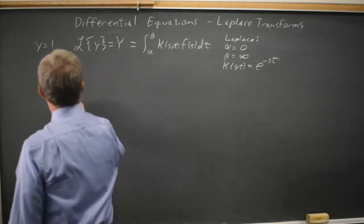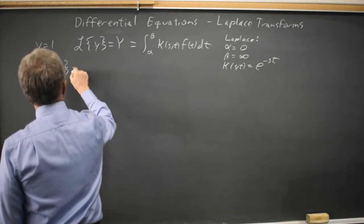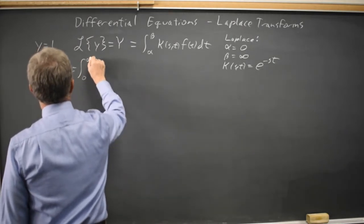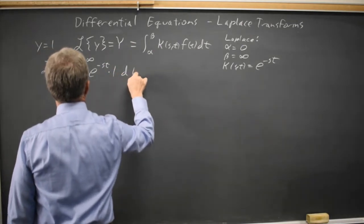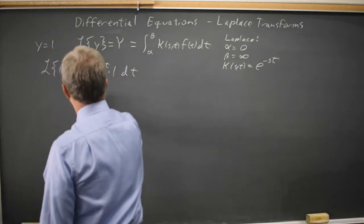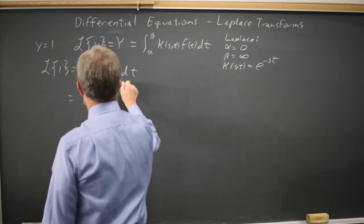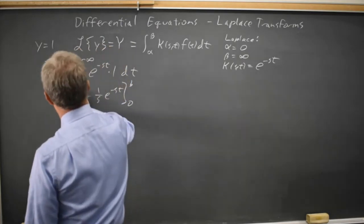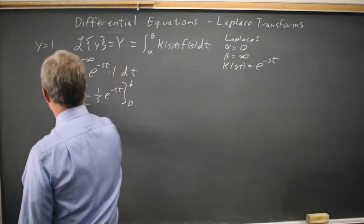So in this particular case, the transform of 1 equals the integral from 0 to infinity of e to negative s t times 1, which is negative 1 over s e to negative s t from 0 to b as b goes to infinity.